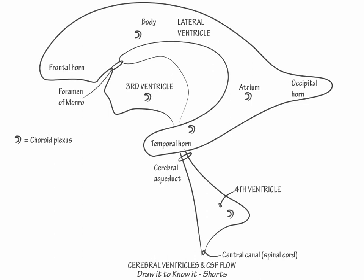Finally, indicate the flow of CSF. Show that CSF empties from the lateral ventricles through the paired foramina of Monroe into the third ventricle, down the cerebral aqueduct, and then into the fourth ventricle.